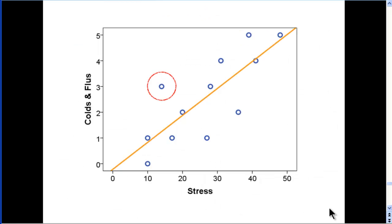Something I'll point out is this person here who had three colds, but a stress level of 14. This person actually scored 14 on stress and had a residual of three. Well, that's the biggest distance between the regression line, isn't it? It looks like it.